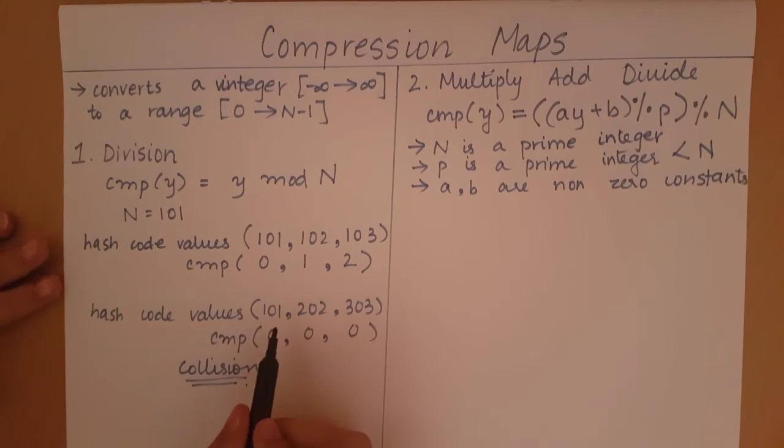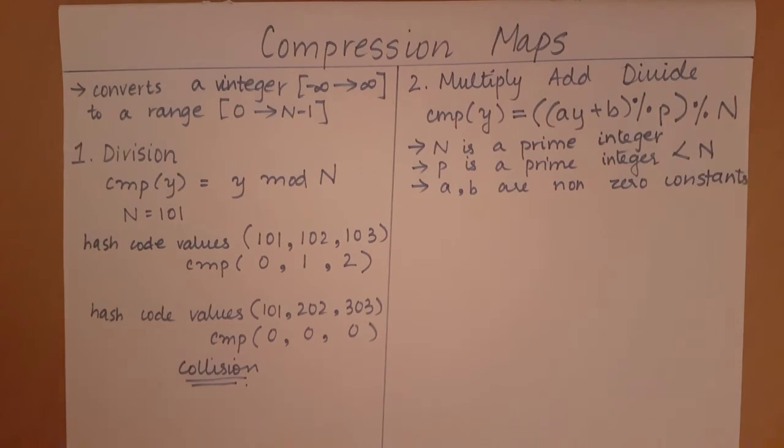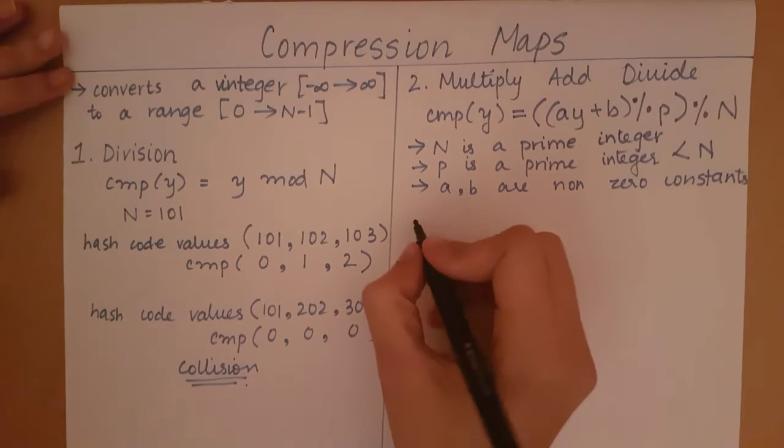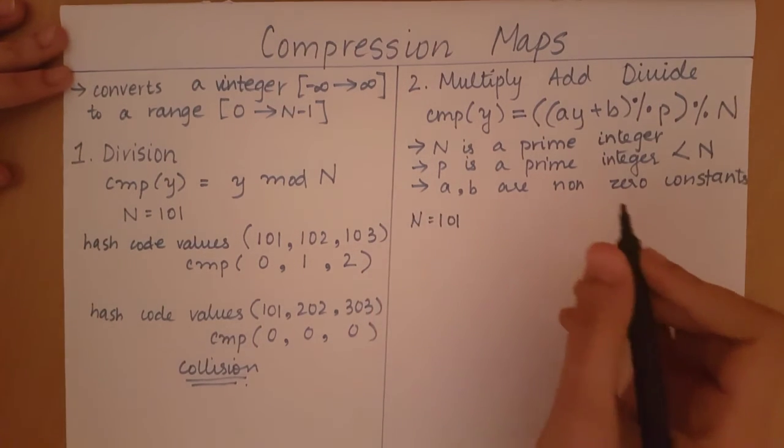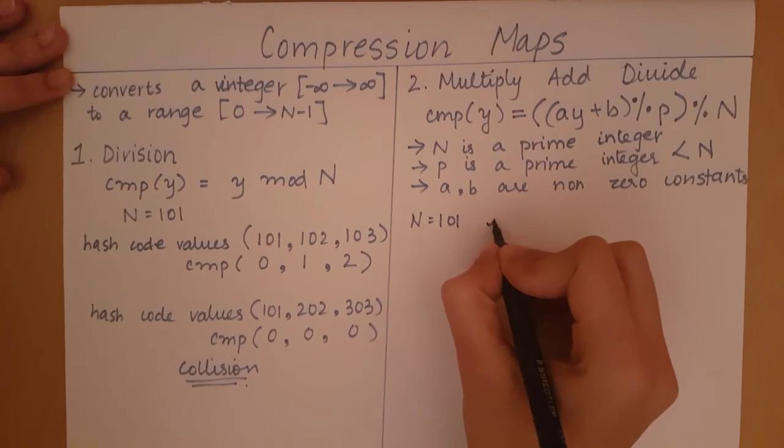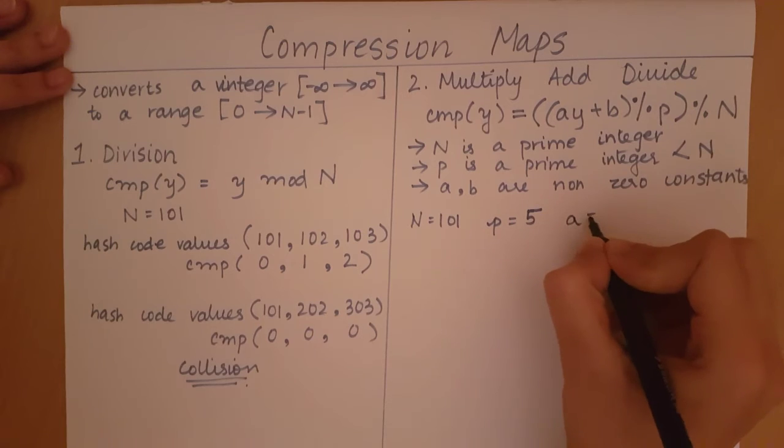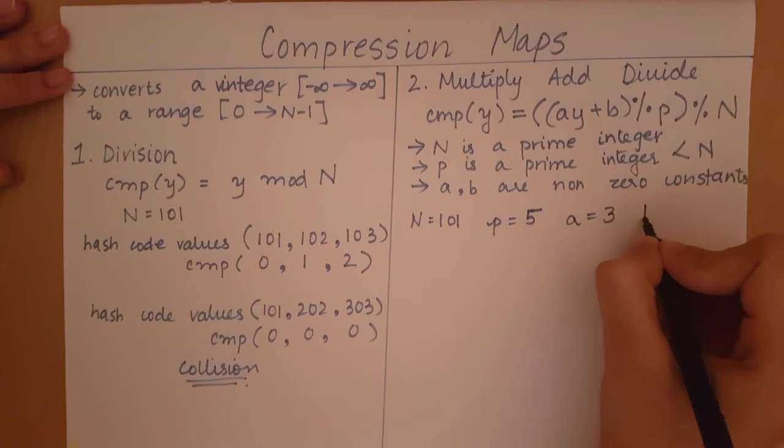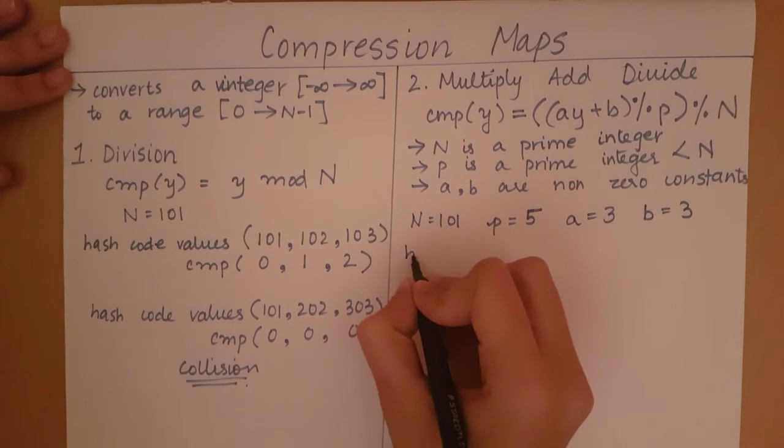So let's take the same example of 101, 202, 303 and see if this method proves to be any better. So we have n equal to 101, p should be any prime integer which is less than n. Let's say p is equal to 5. I am going to take a arbitrarily as 3 and b as 3.